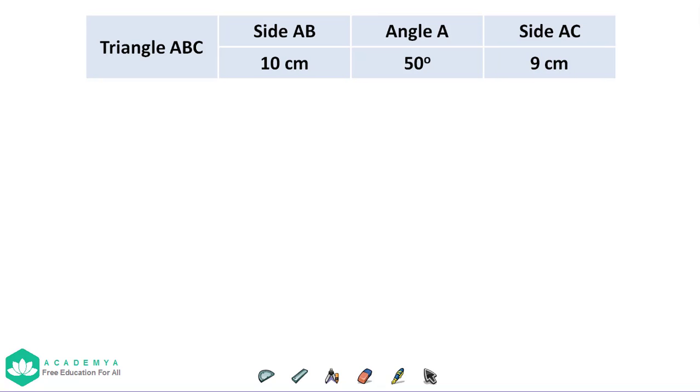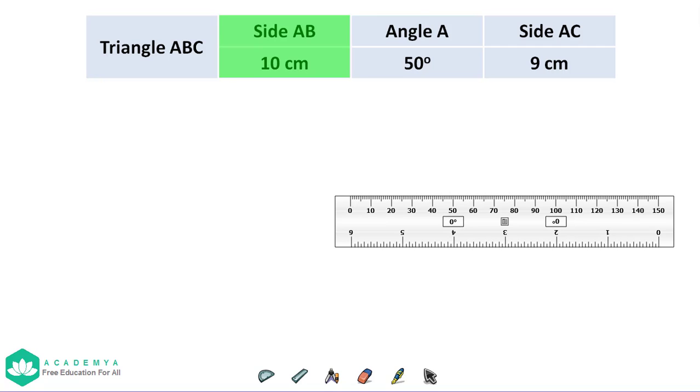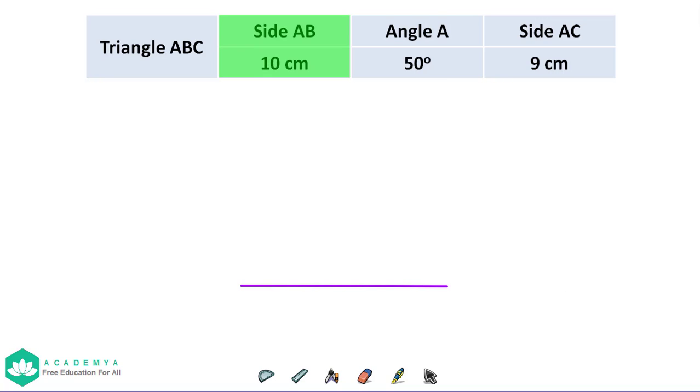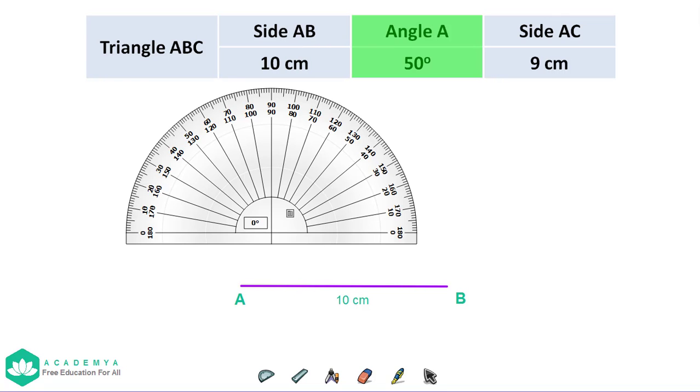First, using a ruler, draw side AB 10 centimeters. Mark the points A and B.